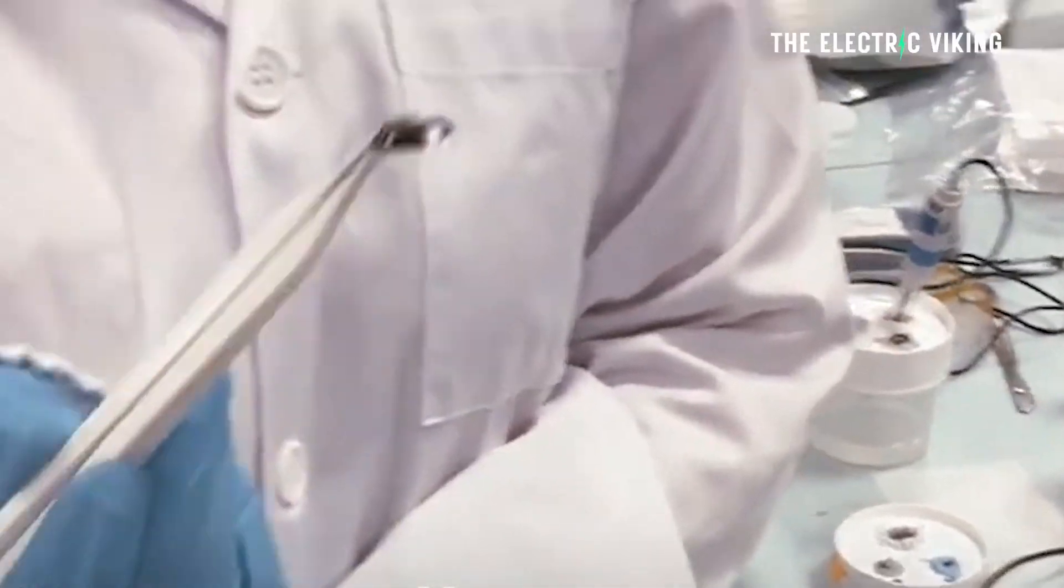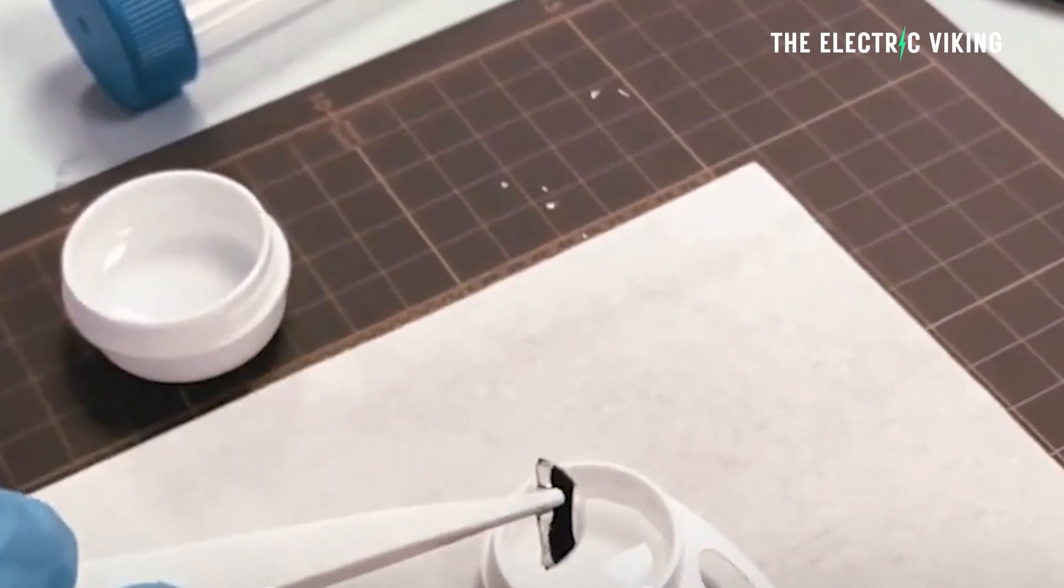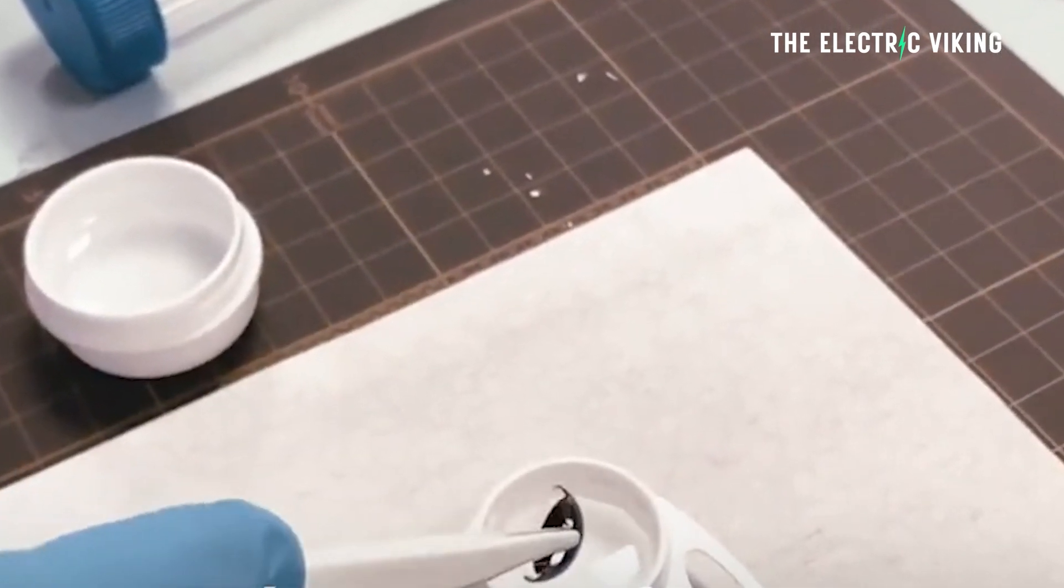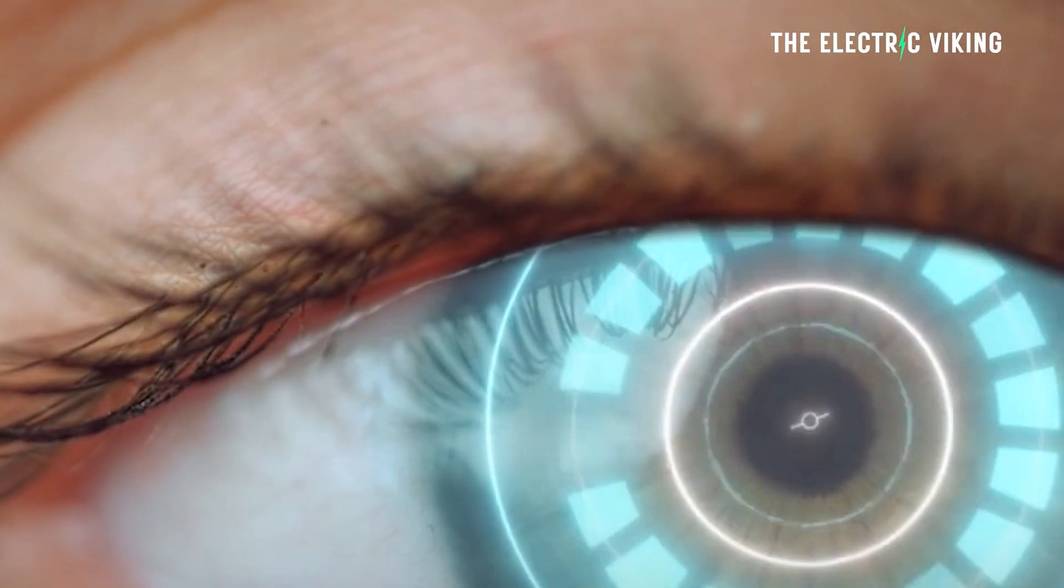By combining the battery and biofuel cell into a single component, the battery can charge itself without the need for additional space for wired or wireless components. Furthermore, the electrodes placed at the outer side of the contact lens ensure that the vision of the eye cannot be obstructed.